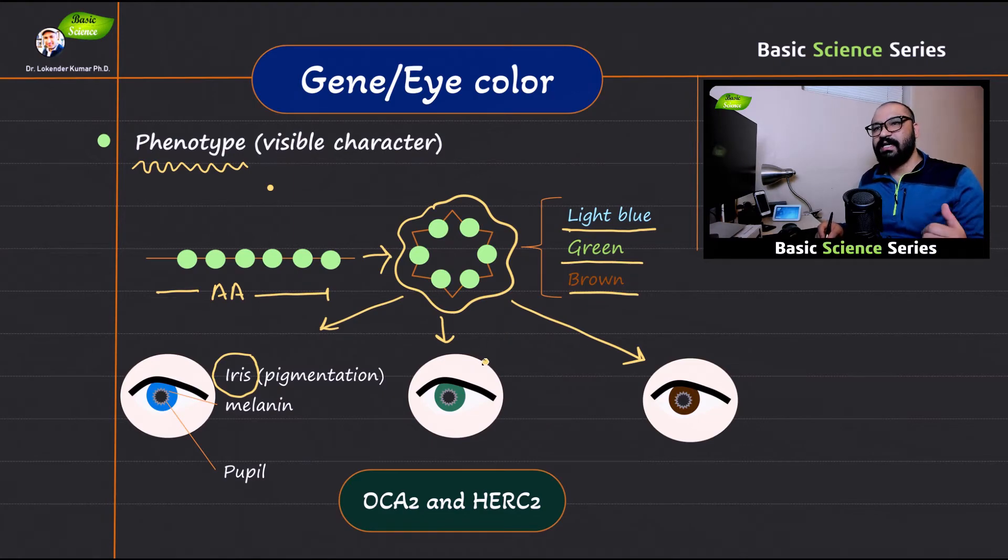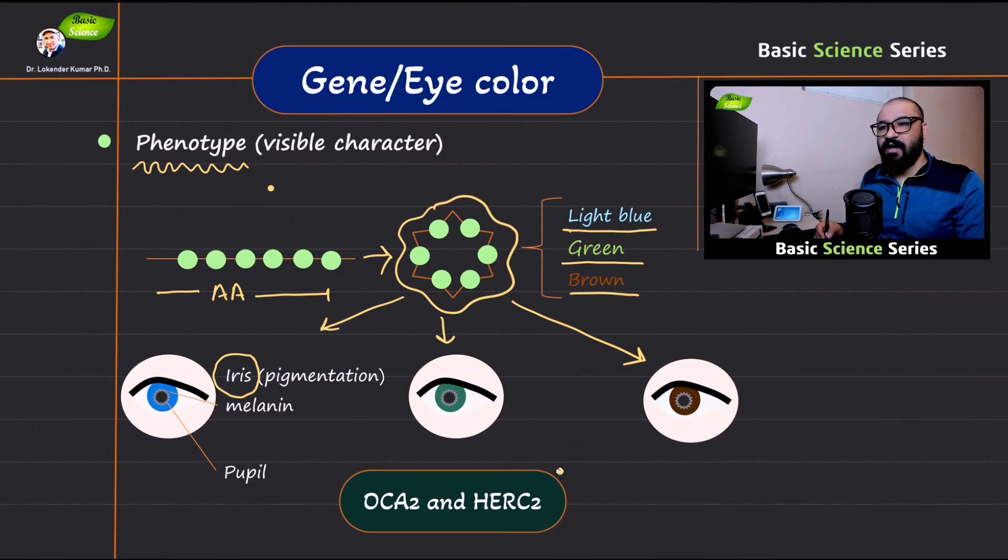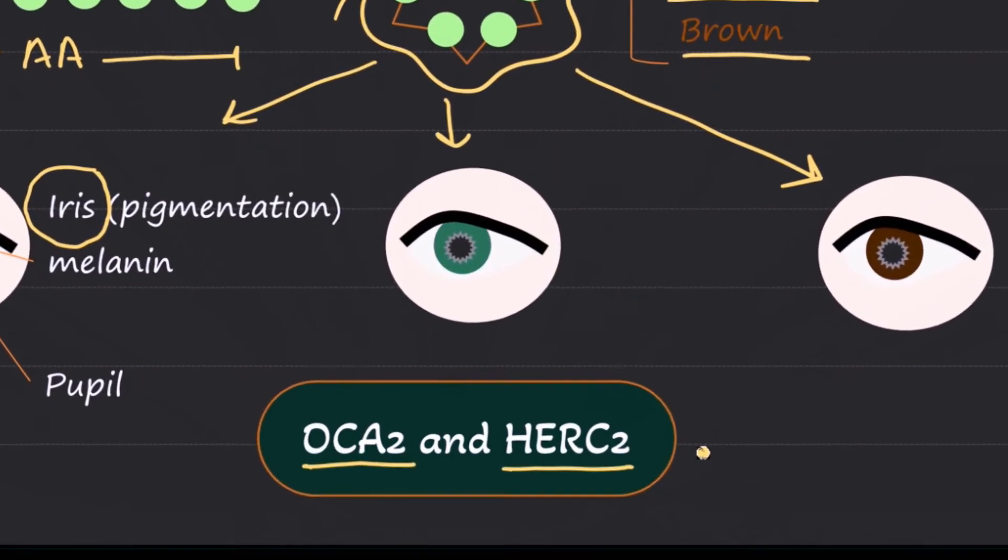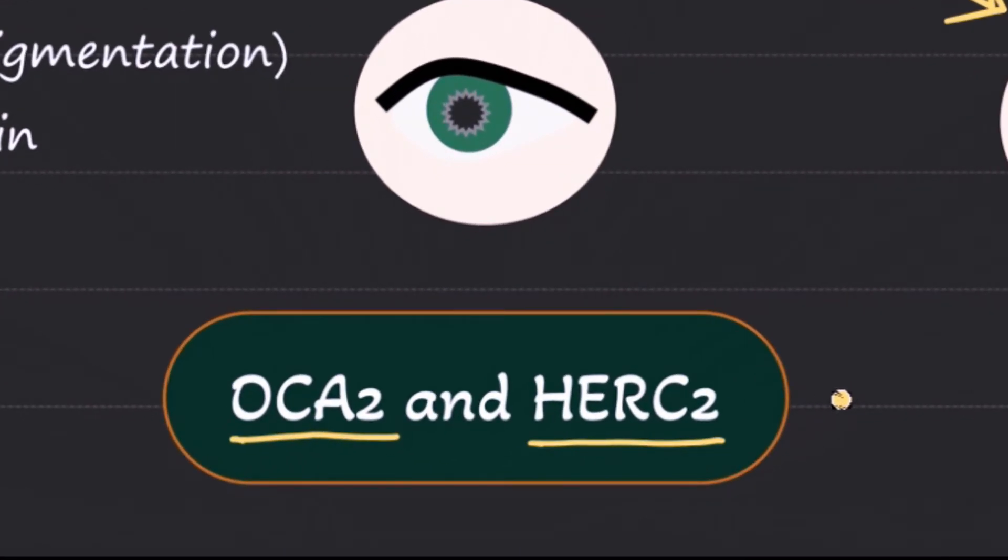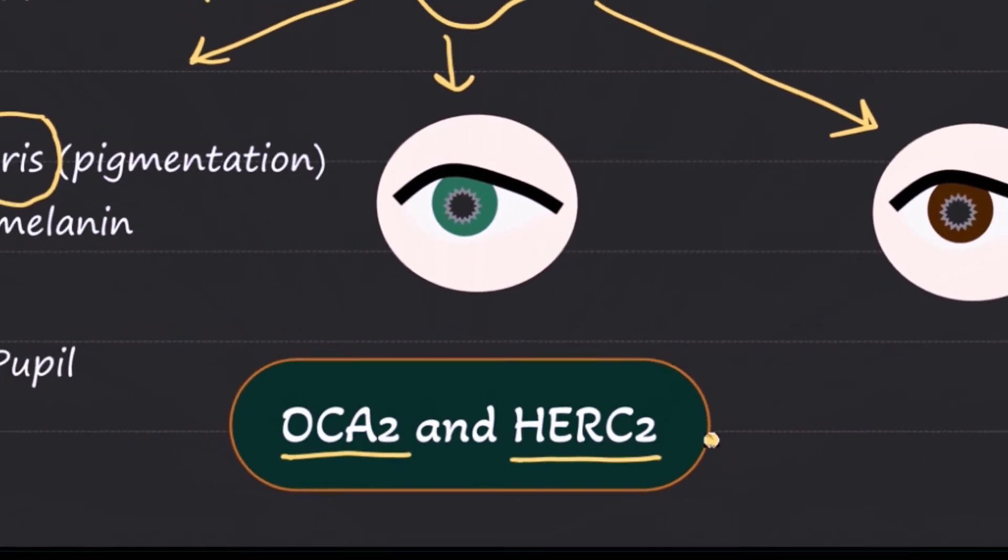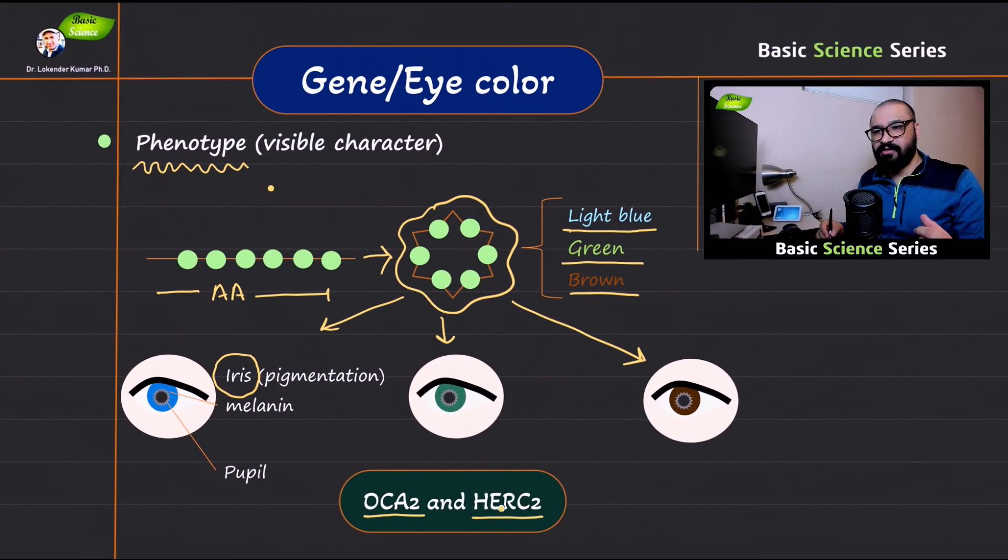Now in case of human eye color there are multiple proteins that are associated and the detail mechanism is still not clear. But it is known that OCA2 and HERC2 these are two important genes that are associated with human eye color. Now I'm going to show you what are the different functions associated with these two genes. So let's jump onto the next slide.